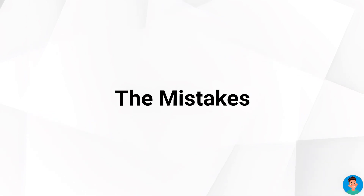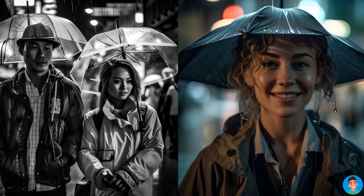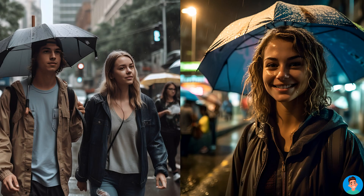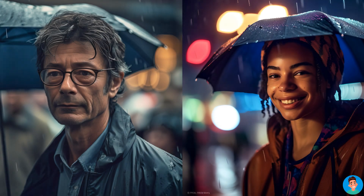Mid-Journey or any other diffusion model is not perfect. You must pay attention to details and may not get what you want on the first try. Look at these photos — it was impossible for me to create a rain image with people holding umbrellas. After plenty of attempts, I defined the keyword 'holding an umbrella in hand' and still could only get one image correct. If you've figured out how to get a perfect realistic photographic image of a couple or person holding an umbrella in the rain, let me know in the comments.